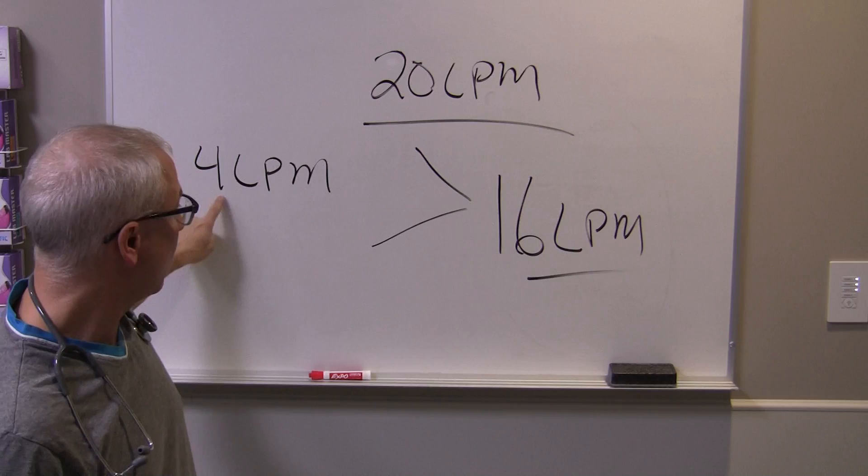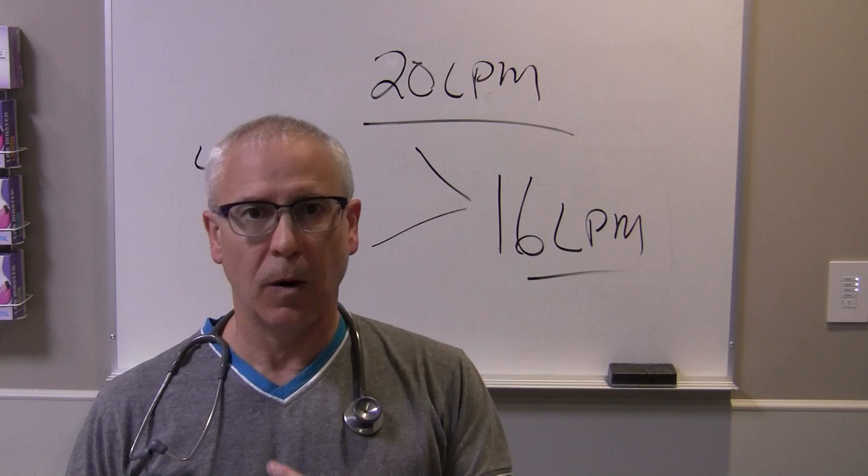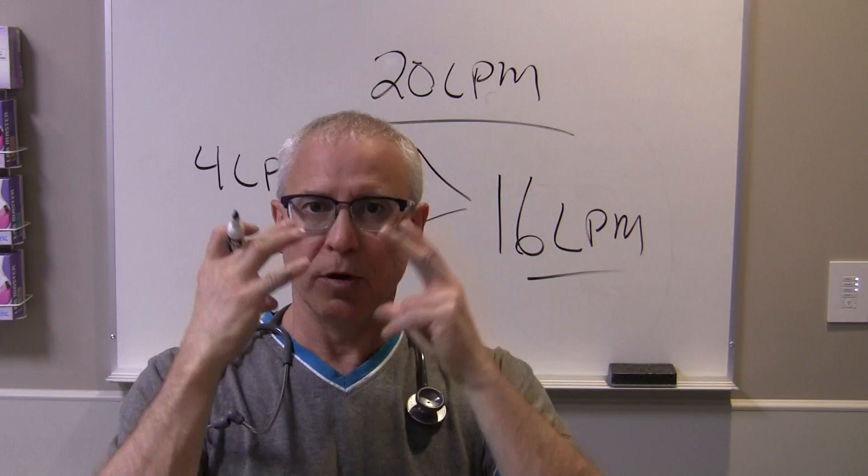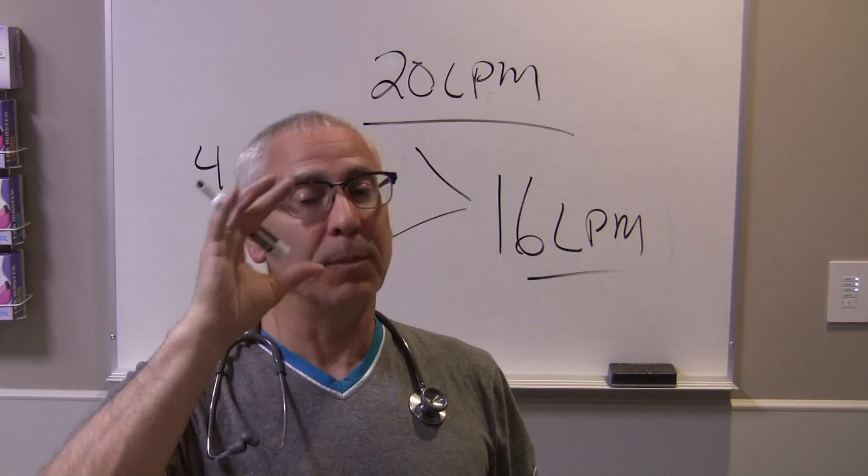These low flow devices — 4 liters a minute, 2 liters a minute, etc. — you can only do that with things like nasal cannulas and low flow appliances. The bigger the device you put on your patient's face for low flow systems, the higher the oxygen flows you're giving the patient, but there's still going to be some degree of room air dilution.